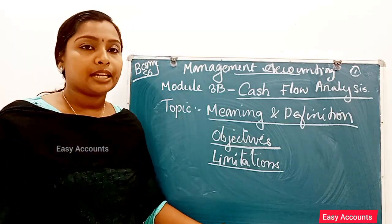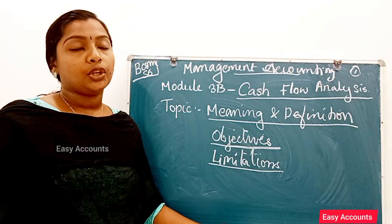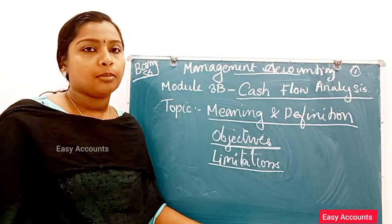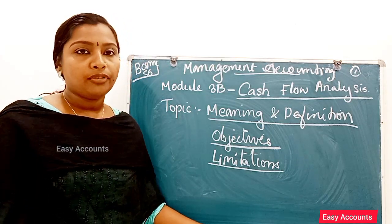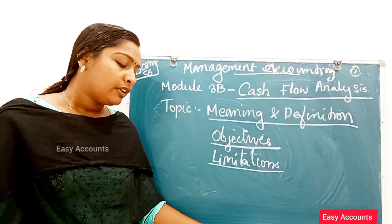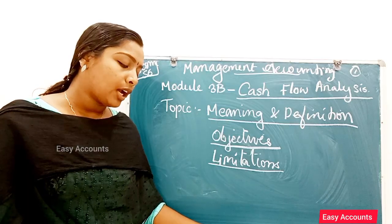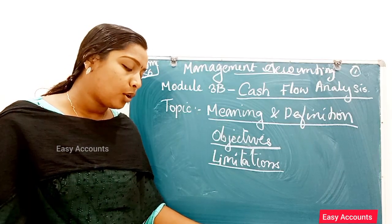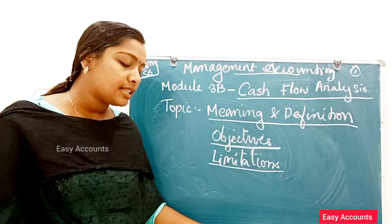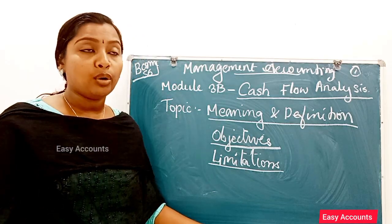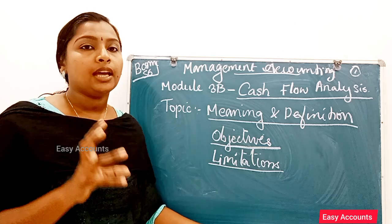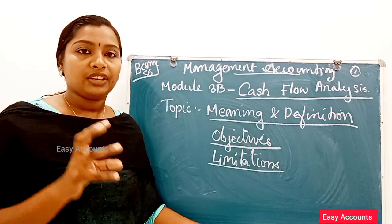The uses and objectives of the cash flow statement are as follows. First, measurement of cash: with the help of the cash flow statement, the inflow and outflow of cash from operating, investing, and financing activities can be measured annually. There are three activities: operating, investing, and financing.